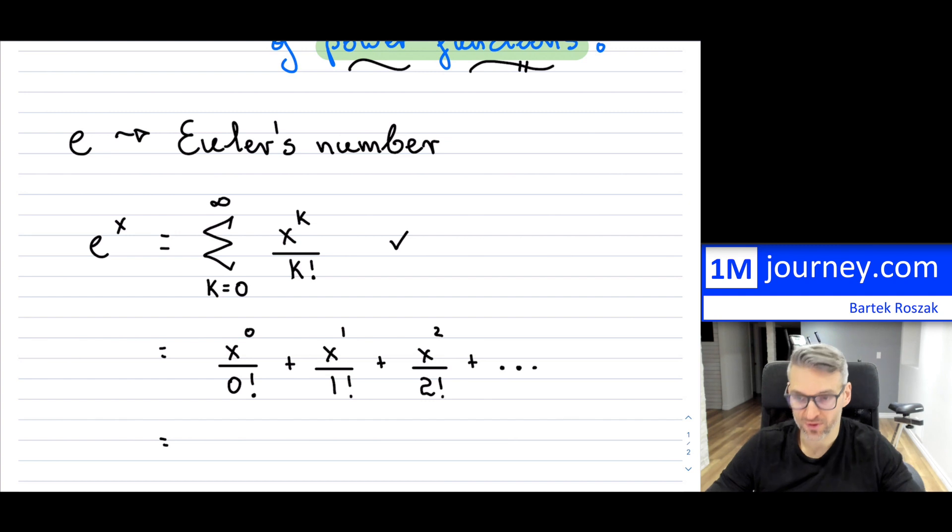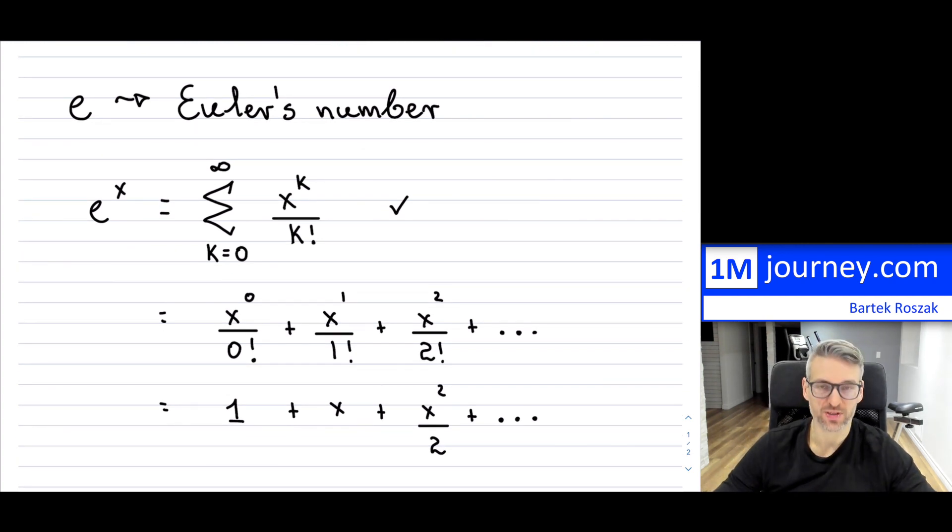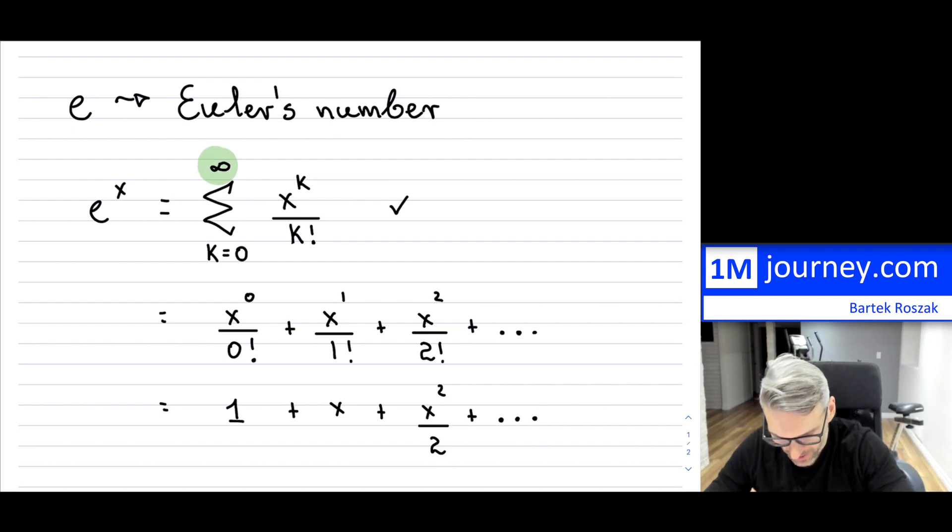For that first term, x to the 0 is just equal to 1, and 0 factorial by definition is also equal to 1, so this is just simply 1. It's going to be 1 plus, now this is going to be x plus, this is going to be x squared divided by 2, and then so on. So this is really neat, right, because it looks like almost like a polynomial. Now it's an infinite polynomial because of the fact that we have this infinity as a summation.